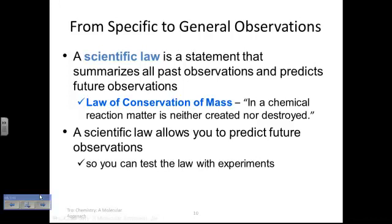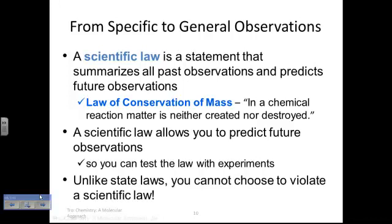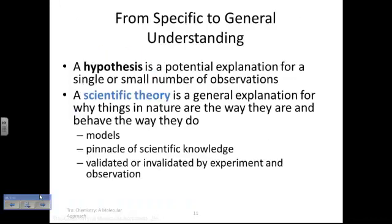A law allows you to predict future observations because we've proven it. The law of gravity - every time I drop an apple, it's going to fall on the ground. You can't choose to violate a scientific law. It has been proven beyond the shadow of a doubt to be true. It's a little different than from what we call a theory. These are still evolving explanations in which data is still not completely in on.